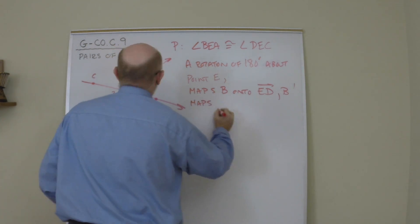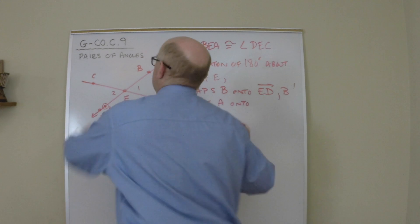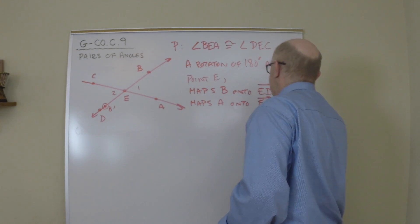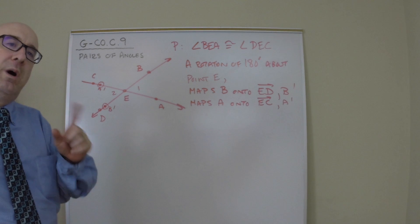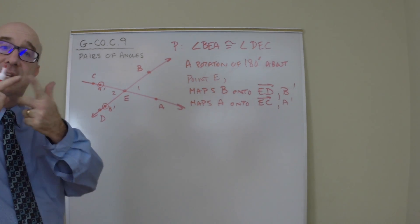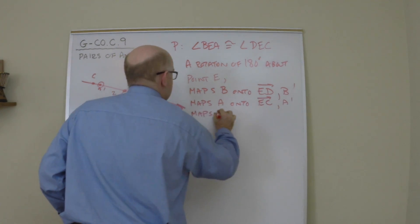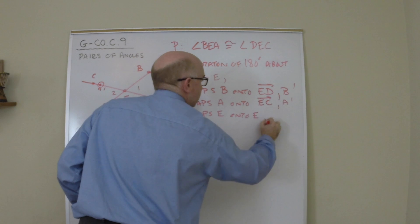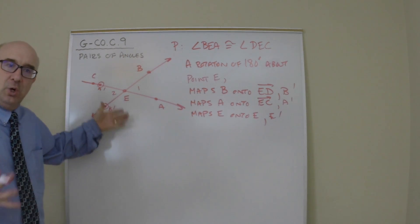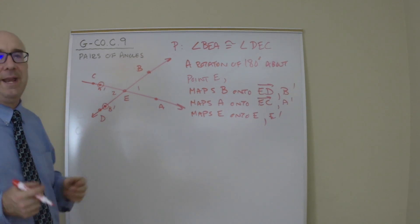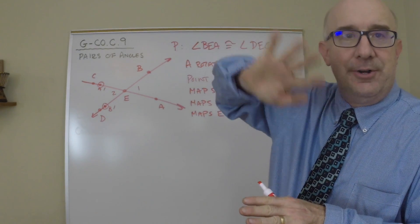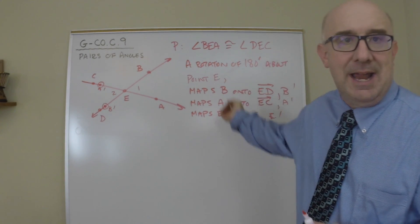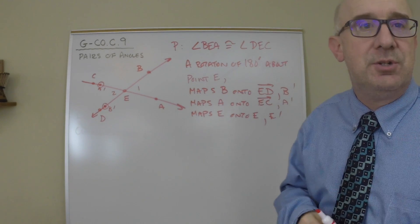It would also map A onto its opposite ray, EC, known as A prime. So A prime would land on the opposite ray. I'm just picking a spot where approximately it would be, but we know it would go across there. Finally, I'm going to do one more point because I need to move an angle, and an angle needs three points. It also maps E onto E because we know that the center of rotation goes nowhere new. Now we're ready. Now listen carefully.